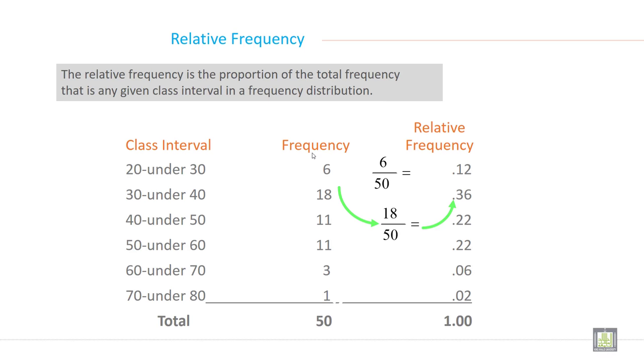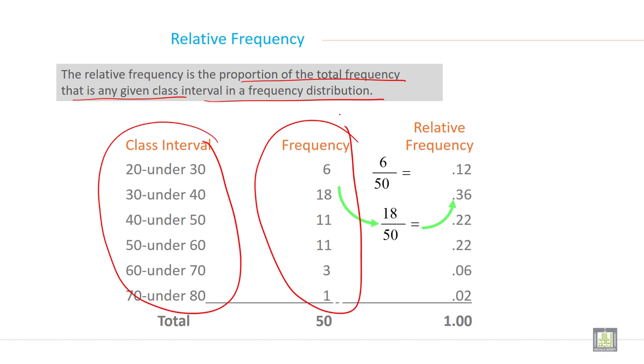What is this and how we can calculate? The relative frequency is the proportion of the total frequency that is any given class interval with a frequency distribution. Now for example suppose this class interval is given and this frequency is given, it is from previous slides. Now how you can calculate relative frequency?